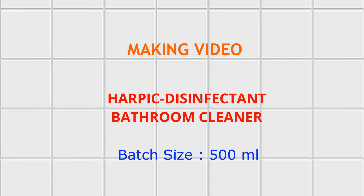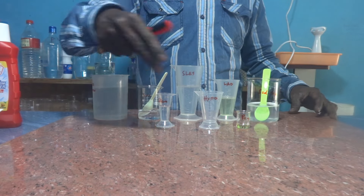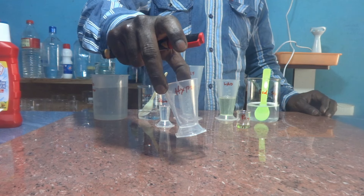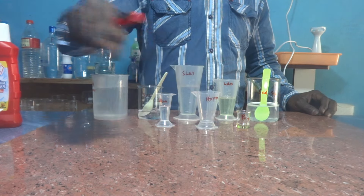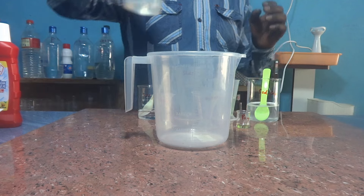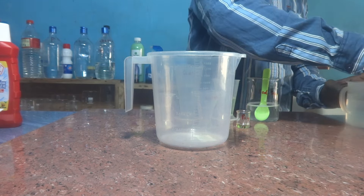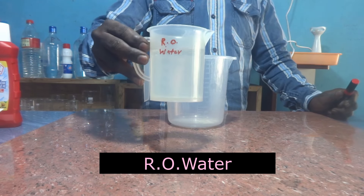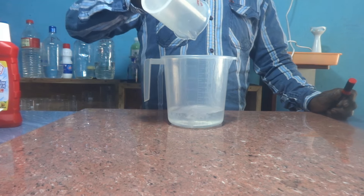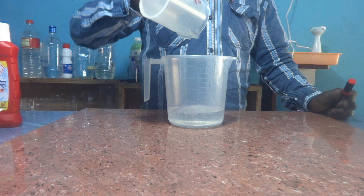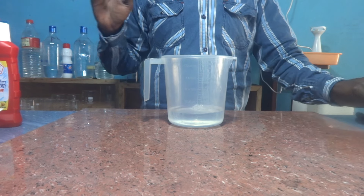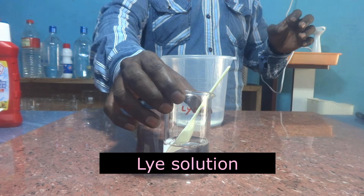Now let us get into the making video. Today our batch size is 500 ml. I have taken all the materials as per the instructions given in the formula. Only one material is pending — sodium hypochlorite, which is a dangerous chemical, so I don't keep it open. I am now arranging all the raw materials in the sequence I am going to use them. First, I am charging RO water. In the PDF procedure I have given all the details — what materials, what quantities, and how to prepare everything. The formula is for a one-liter batch size. I am preparing 500 ml by converting from that formula. Next, I am adding lye solution.